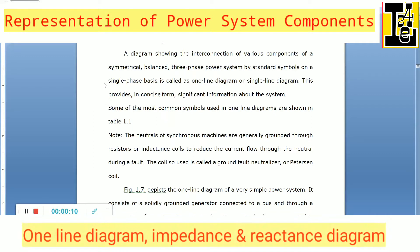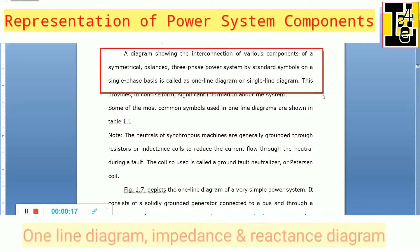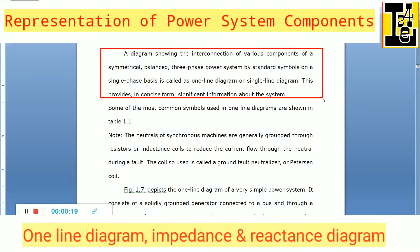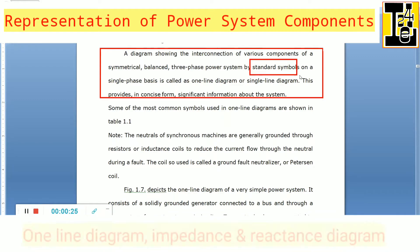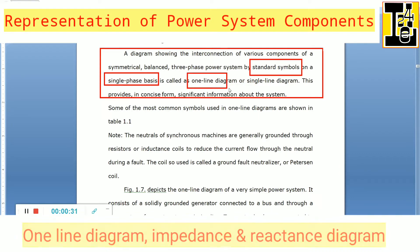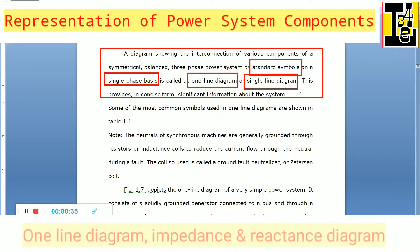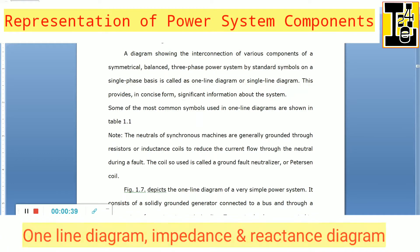A diagram showing the interconnection of various components of a symmetrical balanced three phase power system by standard symbols on a single phase basis is called a one line diagram. It is also called a single line diagram.